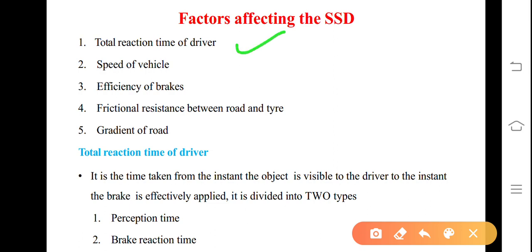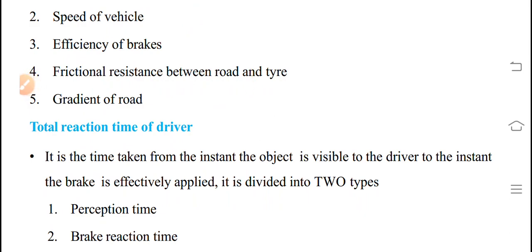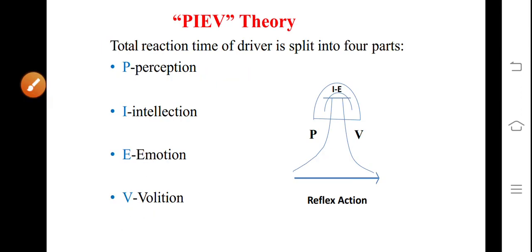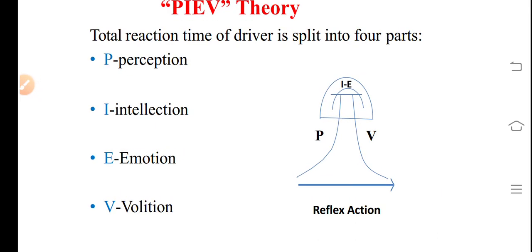Factors affecting SSD: total reaction time of the driver, speed of the vehicle, efficiency of the brakes, frictional resistance between tire and pavement, and gradient of road if any — all five factors are important while determining SSD. Total reaction time of the driver is the time taken from the instant the object is visible to the driver up to the instant the brake is effectively applied. It is divided into two types: perception time and brake reaction time. This total reaction time can be understood with the help of a theory known as PIEV theory.